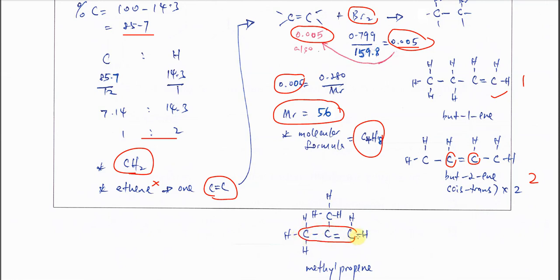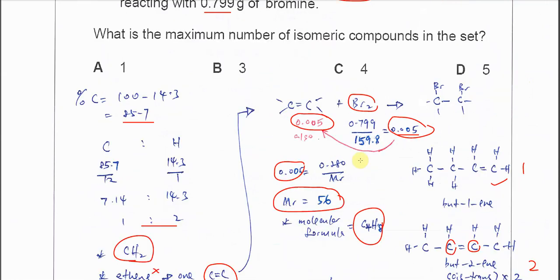Therefore, 1 + 2 + 1 = 4 total isomers. The answer is C. That's all, thank you.